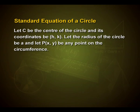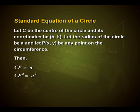Now in order to write down a standard equation of a circle, let us find the equation of any circle whose center and radius are given. Let C be the center of the circle with coordinates (h, k), let the radius of the circle be a, and let P(x, y) be any point on the circumference. Then CP = a; on squaring, CP² = a², which can be written as (x - h)² + (y - k)² = a².